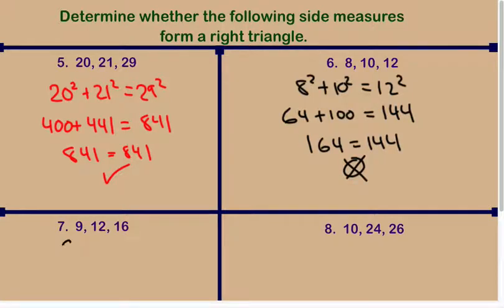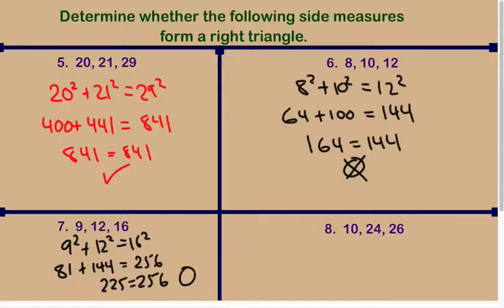9, 12, and 16. So 9 squared plus 12 squared, that's 81 plus 144, equals 16 squared which is 256. 81 plus 144 is 225, which does not equal 256. No. Try 10, 24, 26. So 10 squared is 100, 24 squared is 576, 26 squared is 676. I have a good feeling about this one. Yes.